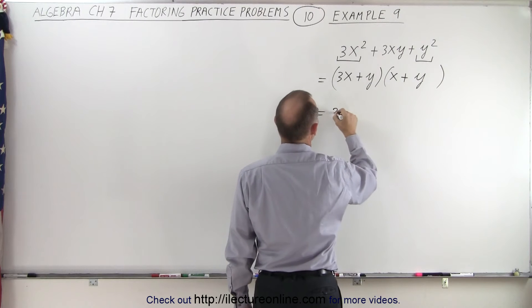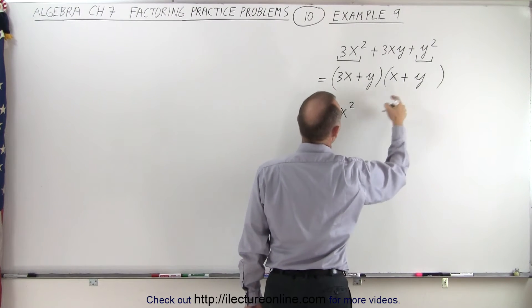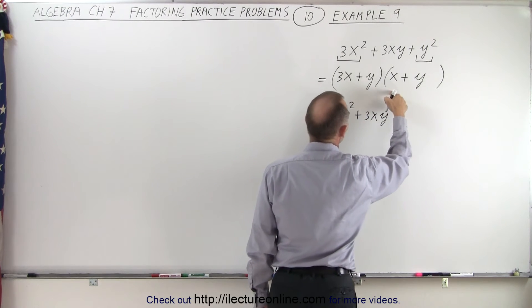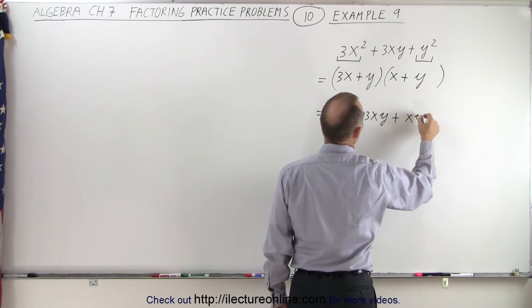3x times x is 3x squared. 3x times y is plus 3xy. y times x, well, that would be plus x times y.